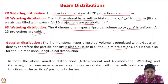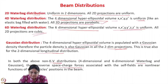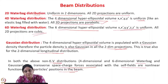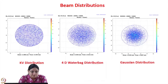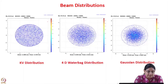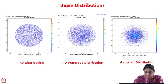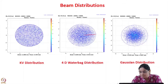In both the non-KV distributions — whether the water bag or the Gaussian — the transverse space charge forces associated with the self-fields are non-linear functions of the particle's position. Only when you have a uniform distribution are the space charge forces linear; otherwise the self-fields are non-linear. This shows the projection of various distributions in the XY space: a uniform KV distribution where the charge density is uniformly distributed, a 4D water bag distribution where the 2-dimensional projections are parabolic with parabolic beam density, and a Gaussian distribution where the charged particles are distributed in a Gaussian manner.